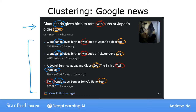What's cool is that this clustering algorithm figures out on its own which words suggest that certain articles are in the same group. There isn't an employee at Google News telling the algorithm to find articles with the words panda, twins, and zoo to put them into the same cluster. The news topics change every day and there are so many news stories, it just isn't feasible to have people doing this every day. Instead, the algorithm has to figure out on its own, without supervision, what are the clusters of news articles today. That's why this clustering algorithm is a type of unsupervised learning algorithm.